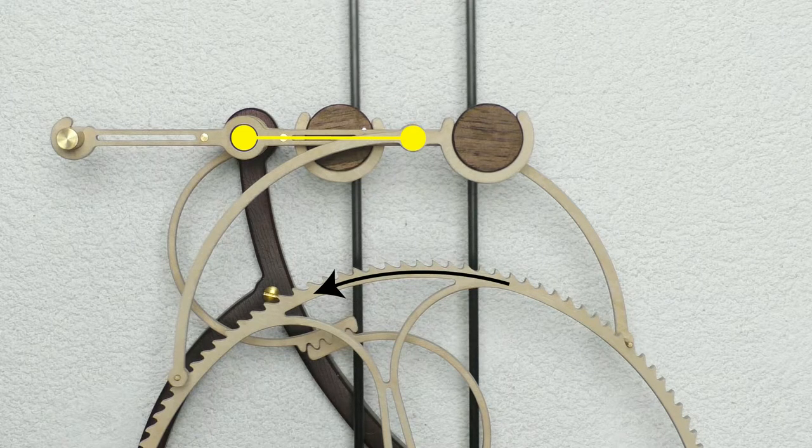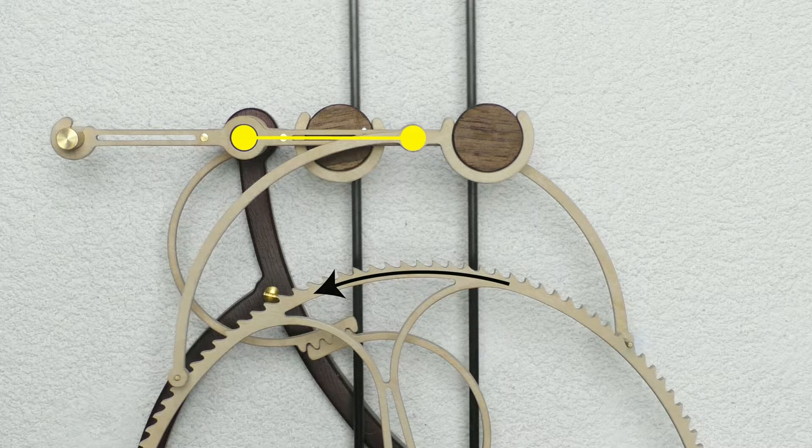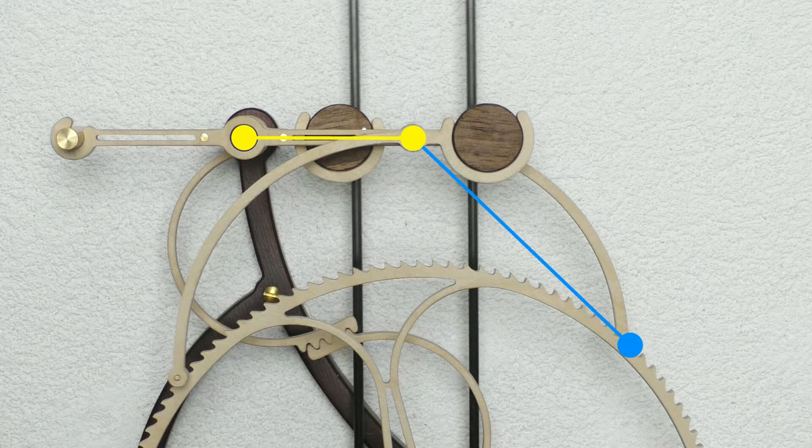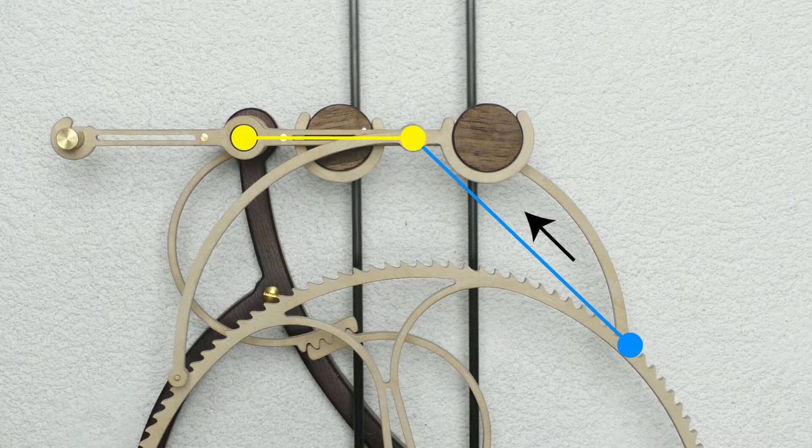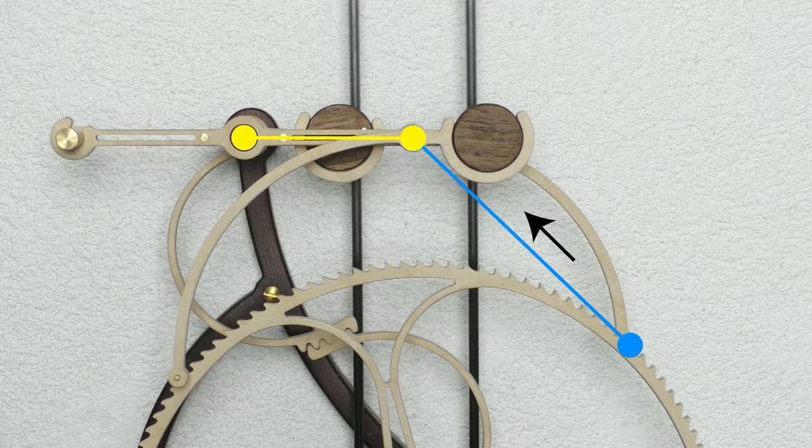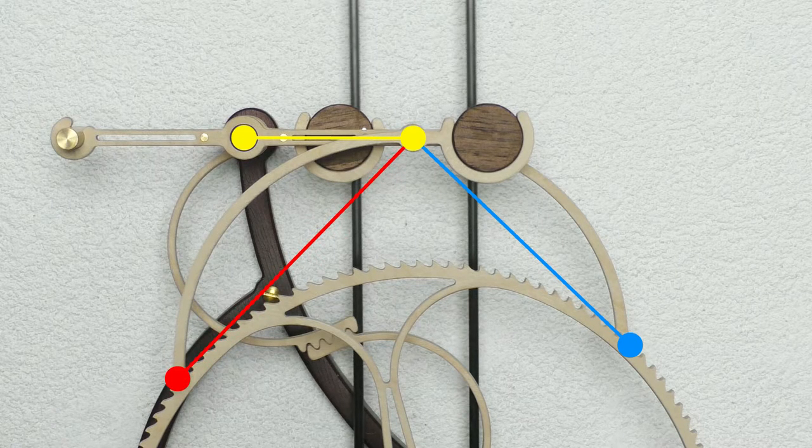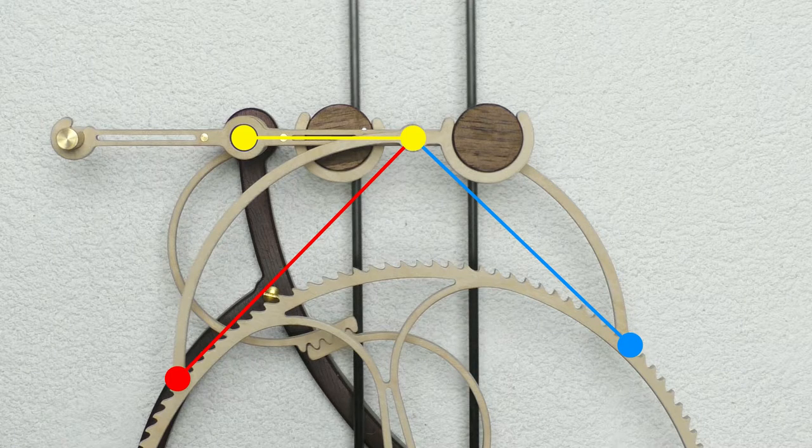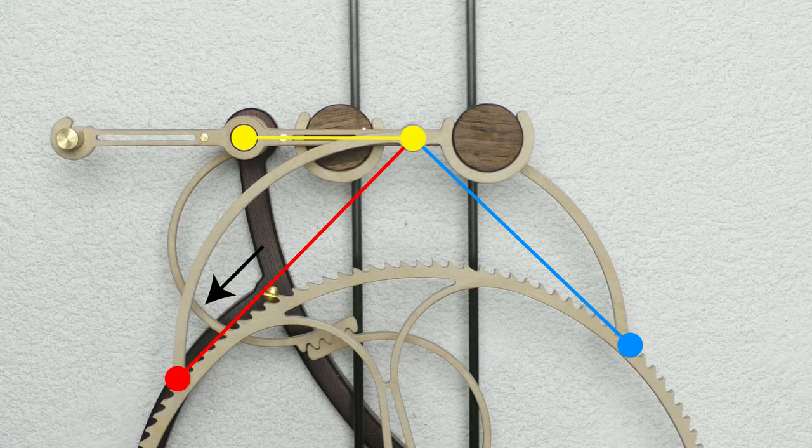The escapement wheel turns in an anti-clockwise direction, so the right hand pallet when it engages will be pushed, therefore we will call it the push pallet. The left hand pallet when it engages will be pulled, so the pull pallet.